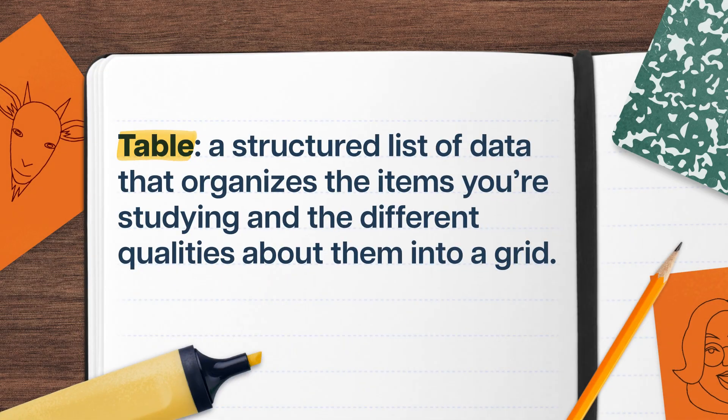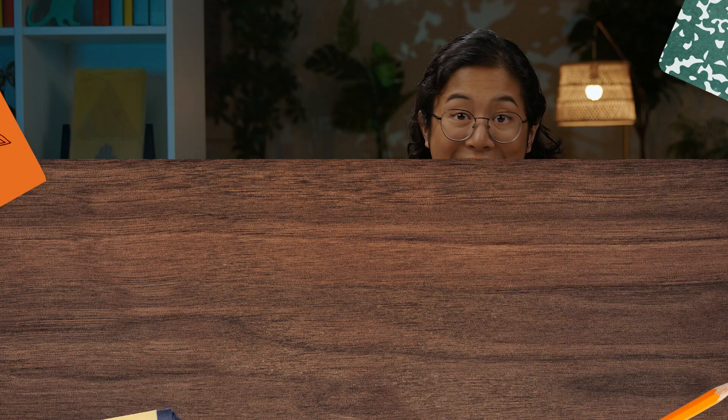Simply put, a table is a structured list of data that organizes the items you're studying and the different qualities about them into a grid. You could put most types of data into a table, but they make the most sense when you're taking a lot of information and boiling it down into something straightforward. A lot of data tell us individual qualities about something, like total cups of lemonade or number of views on this YouTube video. Data like that, about one single characteristic, are called univariate, because they only vary one way.